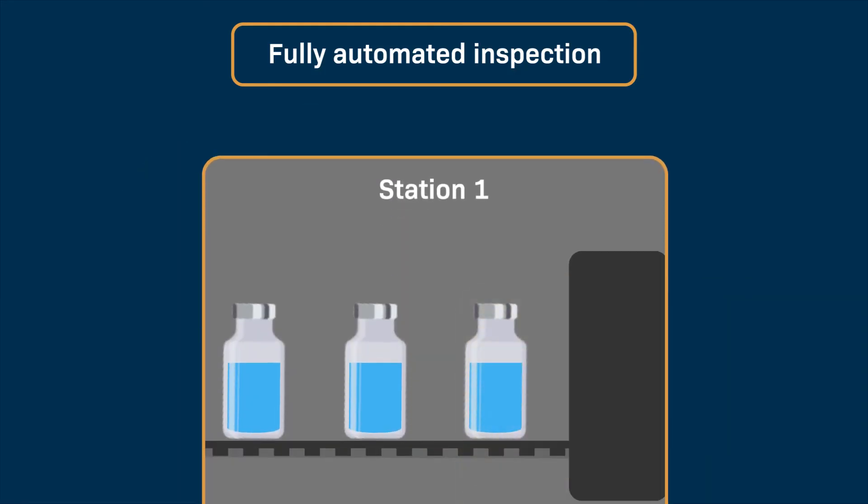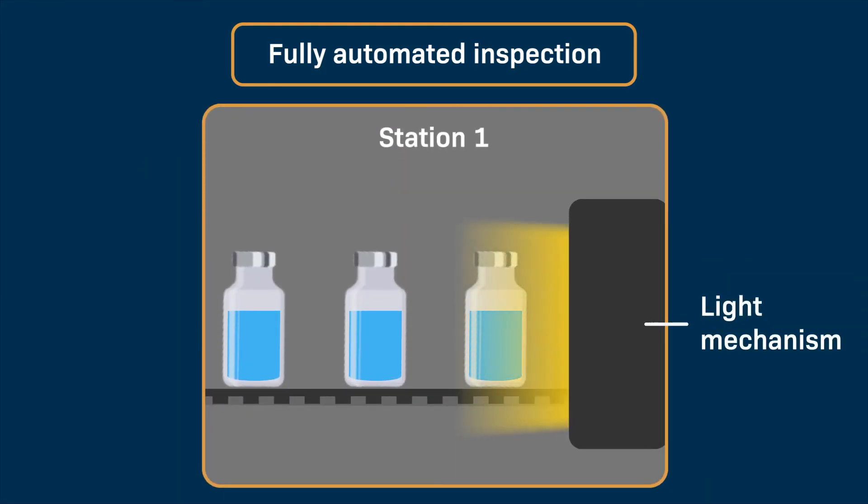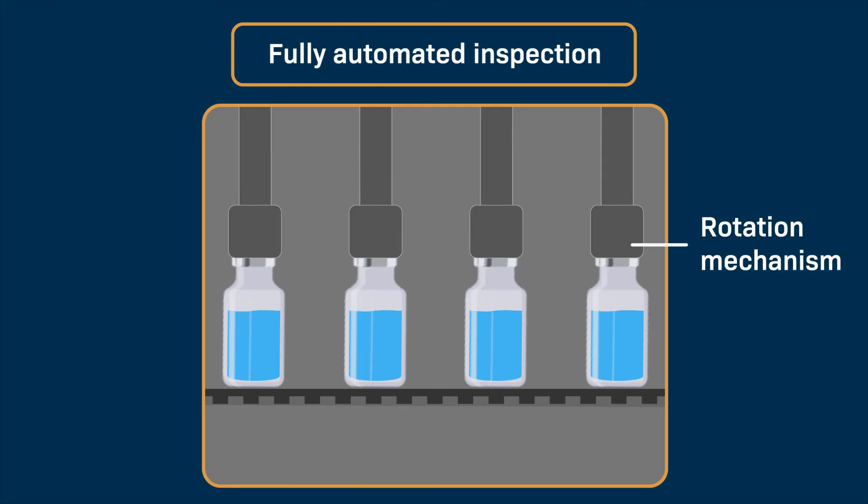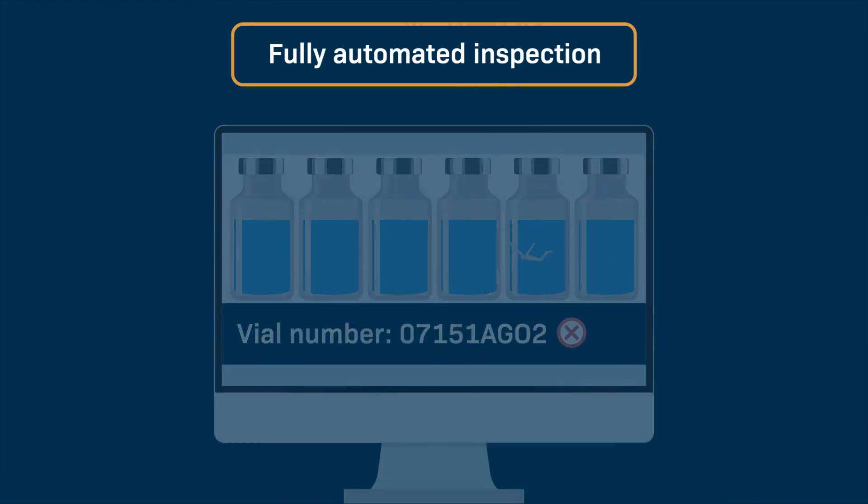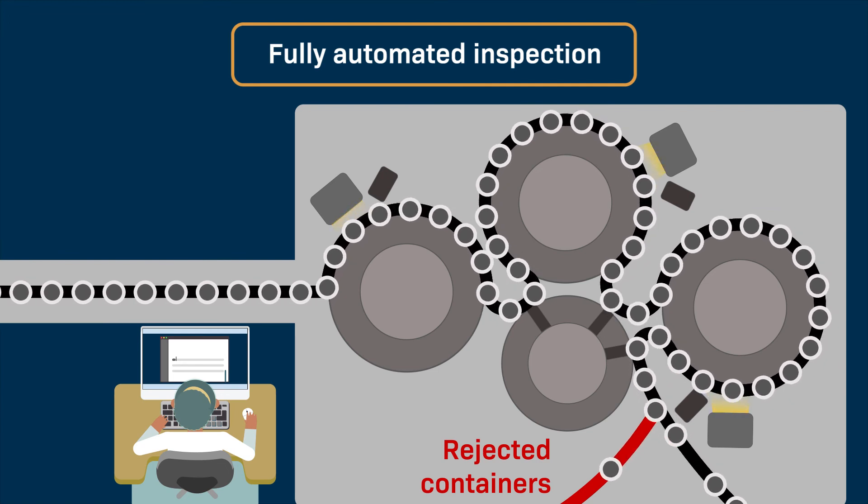Each station is equipped with a light mechanism to create the appropriate contrast and a rotation mechanism to view all of the container surfaces. The images that are taken by the sensors are analyzed by a computer that is programmed with criteria for accepting or rejecting the container. The equipment automatically removes rejected containers.